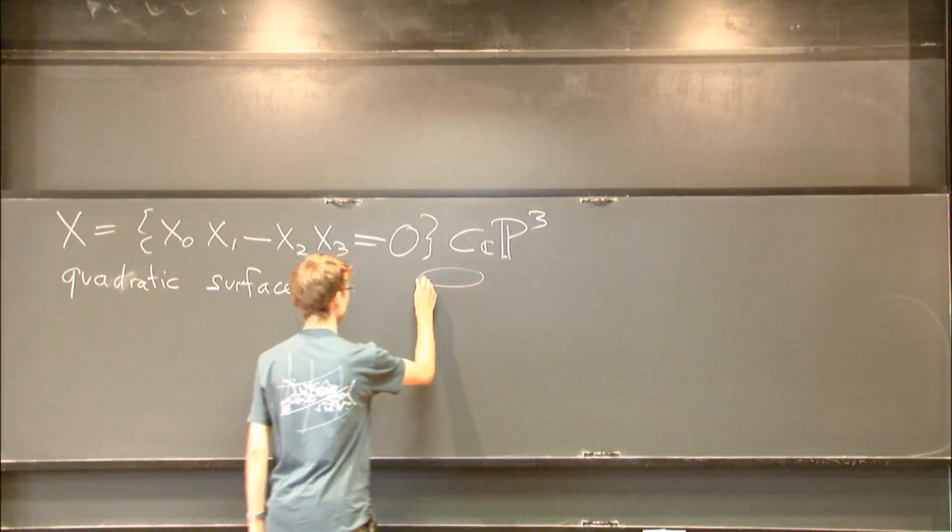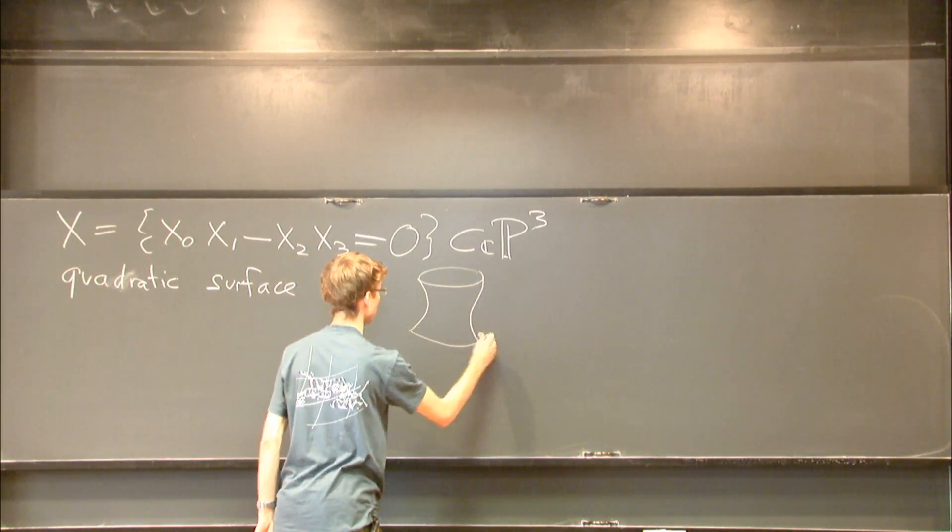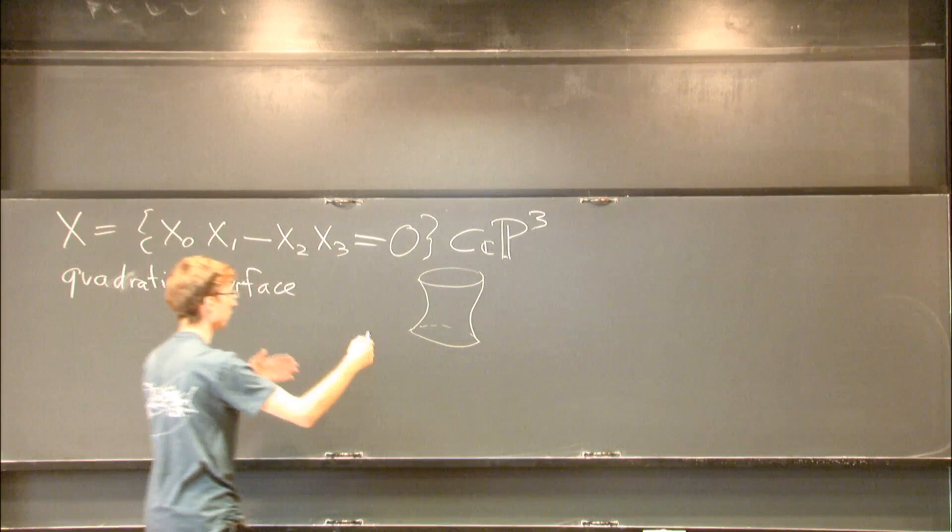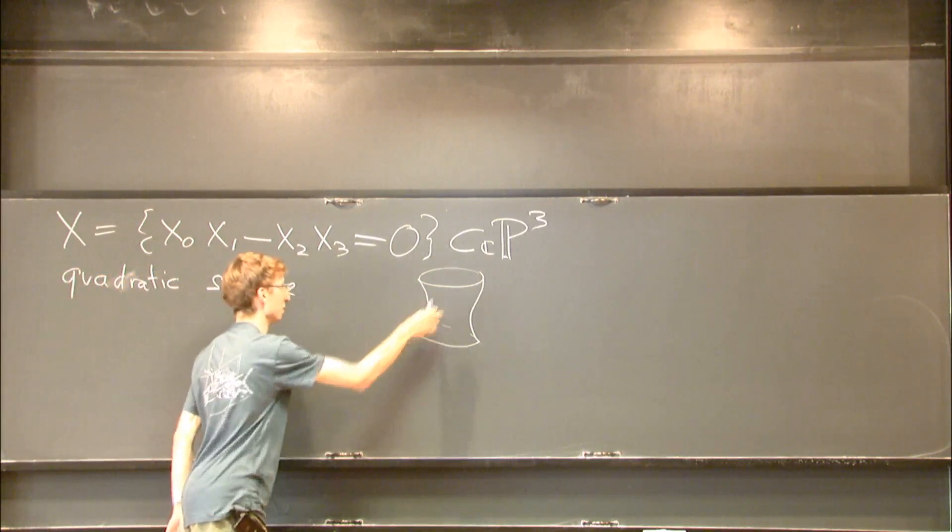It might look something like - this is usually how people draw it. Kind of like a cylinder, but the surface of a cylinder, a bit narrower in the middle.